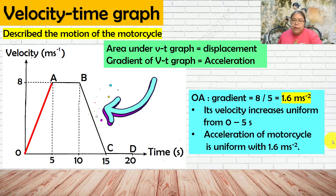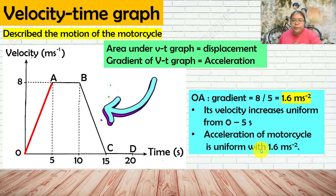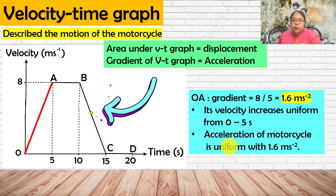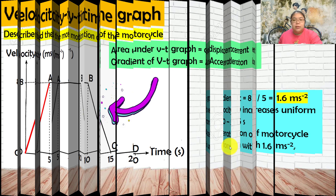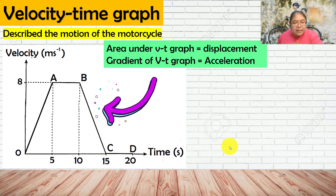The explanation for OA: velocity increases uniformly from 0 to 5 seconds. The acceleration of the motorcycle is a uniform 1.6 m/s². For this upward slope, we can say velocity increases, or equivalently, there is uniform acceleration.